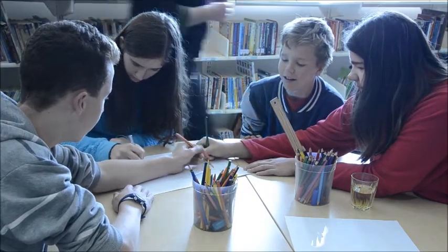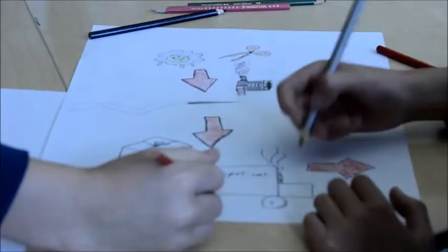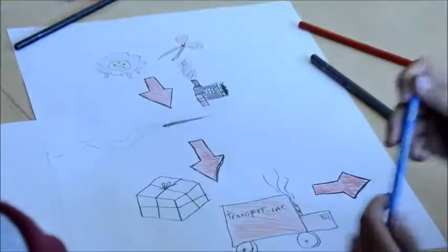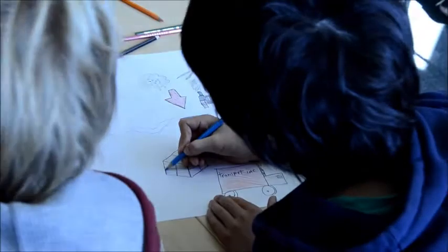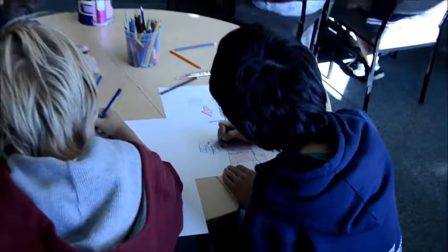The process of mapping the products entire life encourages students to think about the different environmental impacts that occur across the full life of the product. And it also helps them consider where they might be able to make design changes to help reduce these.